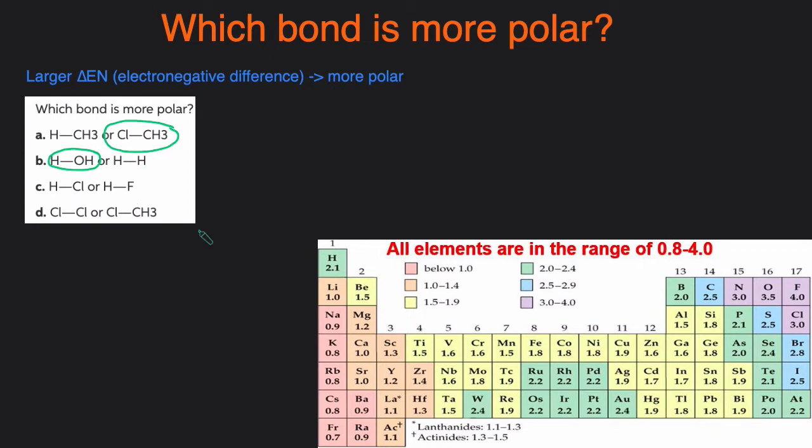Next one: H-Cl versus H-F. So we have H-Cl and then H-F. H-Cl is 3.0 and 2.1, that's a difference of 0.9, and H-F is 2.1 and 4.0, that's a difference of 1.9. So H-F, because that's a larger difference, it's going to be more polar.